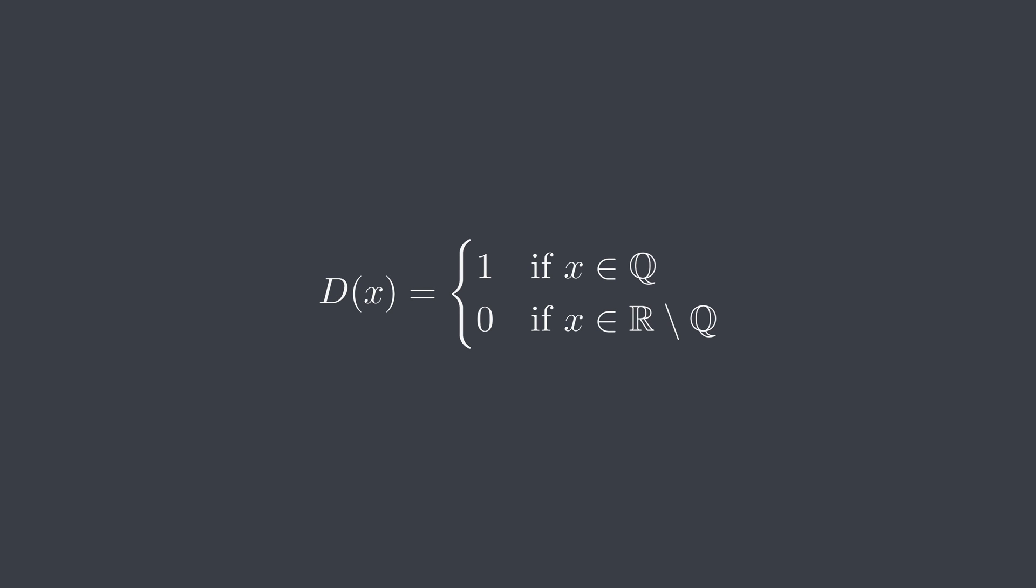The Dirichlet function is defined as 1 when x is a rational number and 0 when x is an irrational number. And I find that the Dirichlet function is a perfect factory for memes.